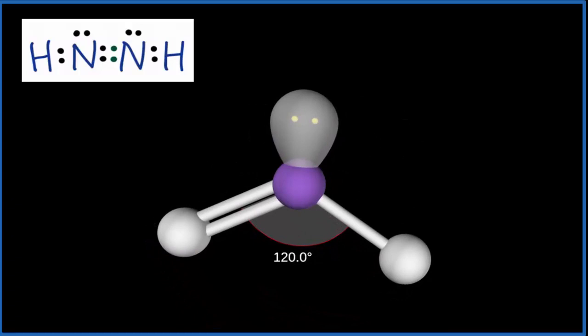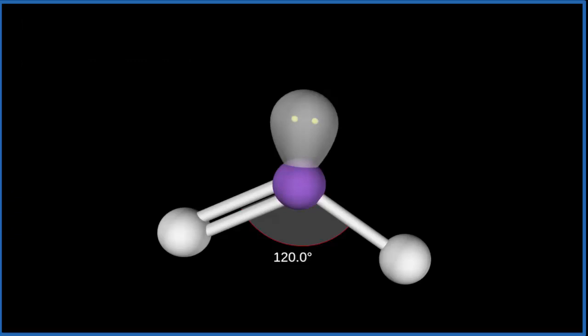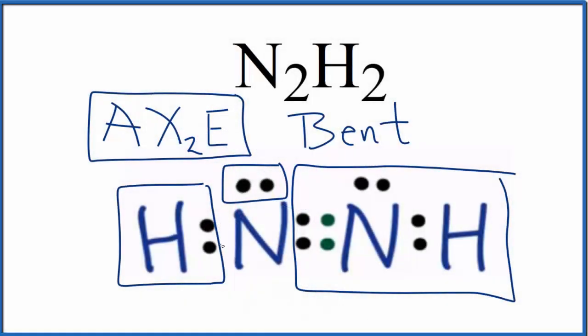But our molecular geometry, where we only take into account the atoms, let's hide the lone pairs, our molecular geometry is bent. Put the lone pairs back, let's go back to our Lewis structure. So whether you kind of visualize what's happening or if you use this AXE notation, we end up with a bent molecular geometry, bond angle about 120 degrees, electron geometry trigonal planar.